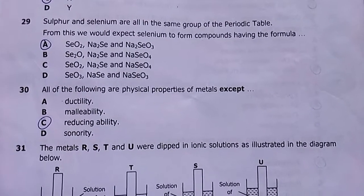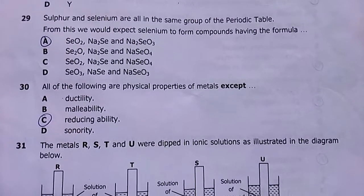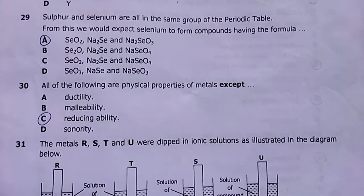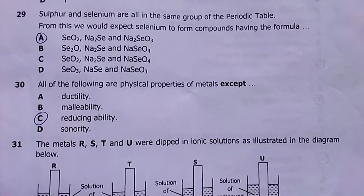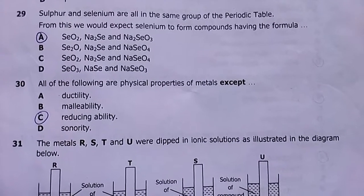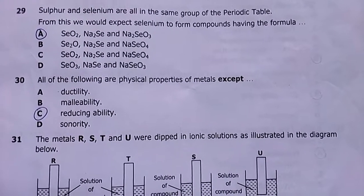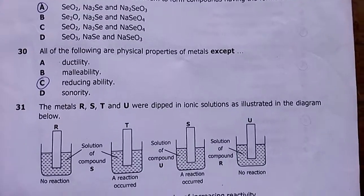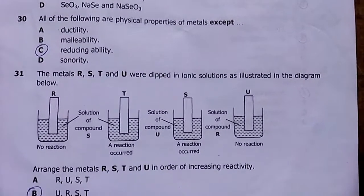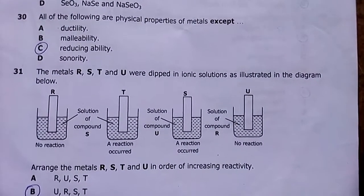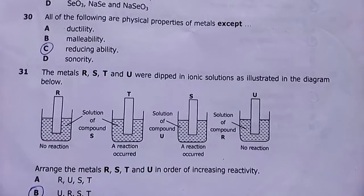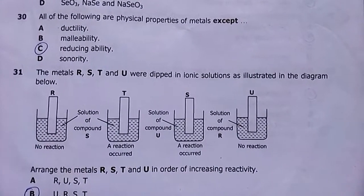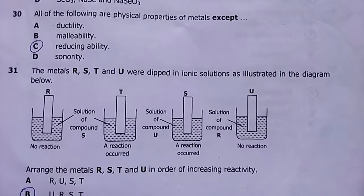Number thirty: all of the following are physical properties of metals except the reducing ability. Reducing ability is a chemical property — the rest are physical. Answer is C.